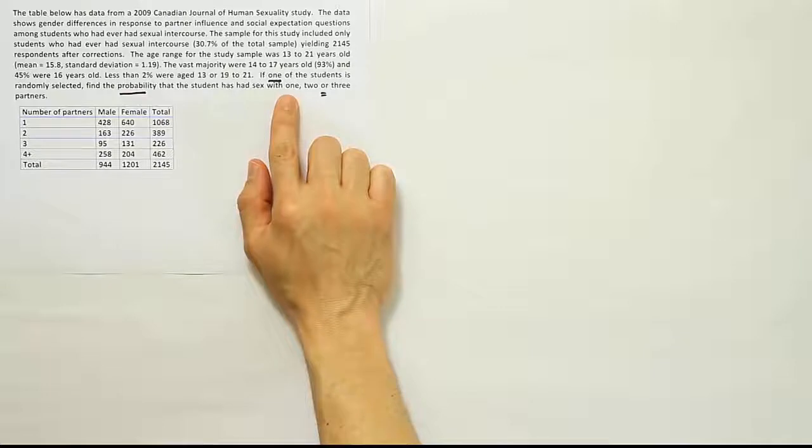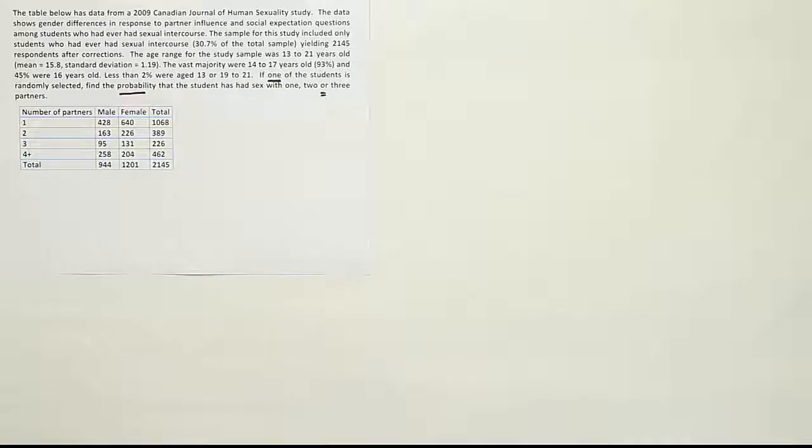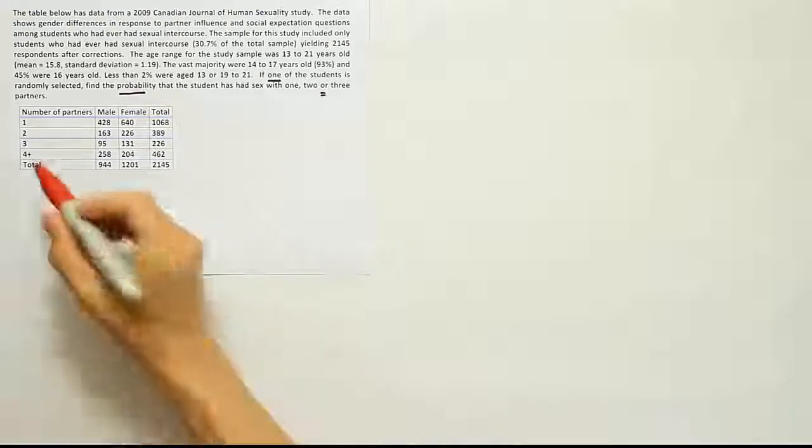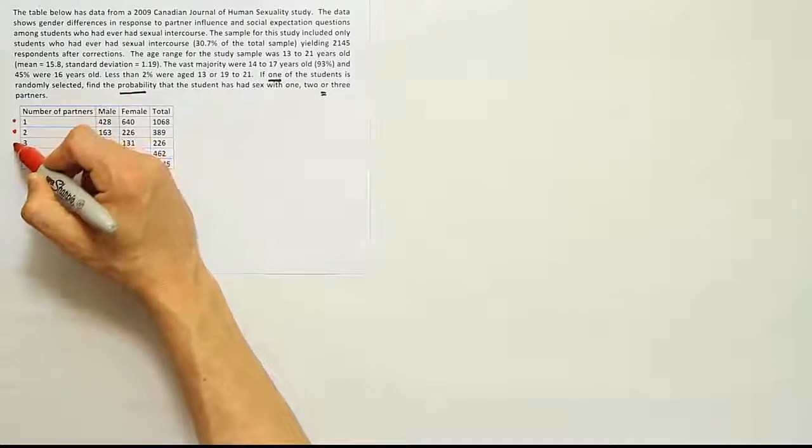Remember, mutually exclusive means that you cannot belong to one category and the other at the same time. I think that's what we have here. Our table says number of partners, either one partner, two partners, or three partners.